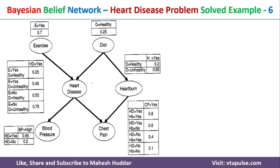In this case, we have been given a Bayesian belief network with six attributes: exercise, diet, heart disease, heartburn, blood pressure, and chest pain. The conditional probability table for each of these particular nodes is also given to us.